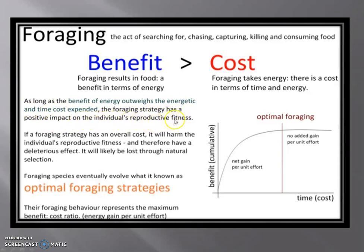As long as the benefit of energy outweighs the time and energy cost expended, the foraging strategy has a positive impact on the individual's reproductive fitness. If a foraging strategy has an overall cost greater than benefit, it will harm the individual's reproductive fitness and have a deleterious effect, and will likely be lost through natural selection. Species eventually evolve what is known as the optimal foraging strategy, where foraging behavior represents the maximum benefit-to-cost ratio — energy gain per unit effort. Intermediate size of food provides greater net energy, and increased net energy gain leads to more fitness, supporting survival and reproduction.